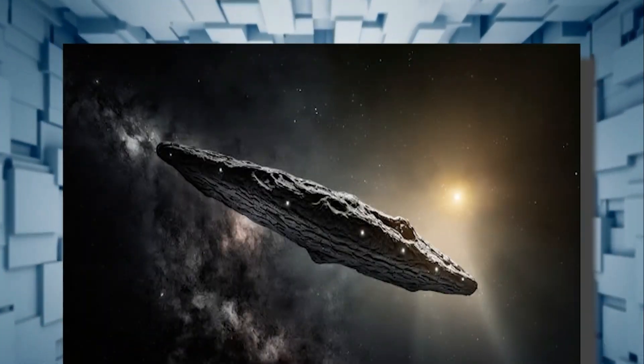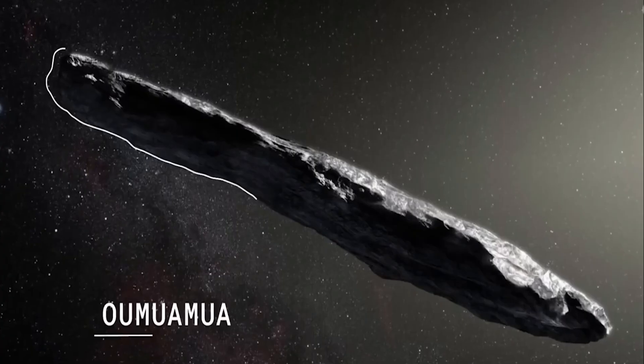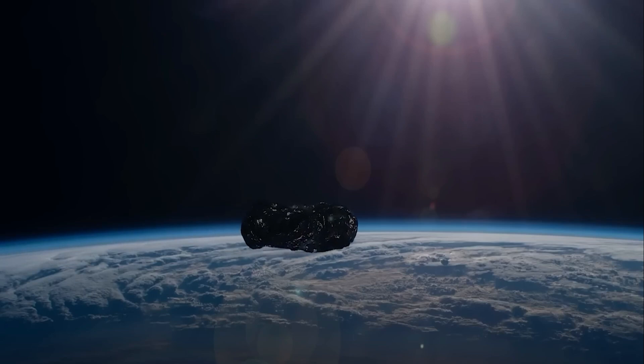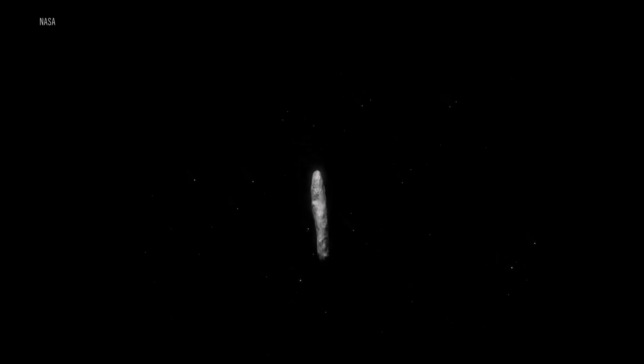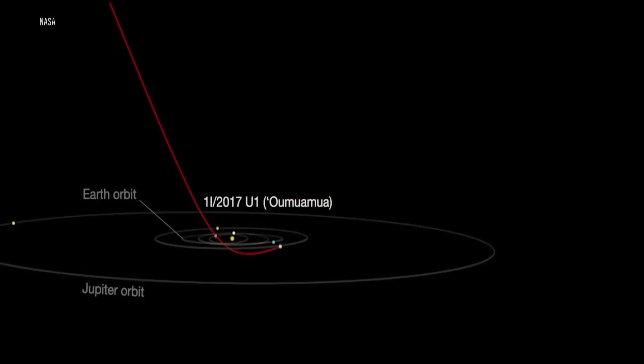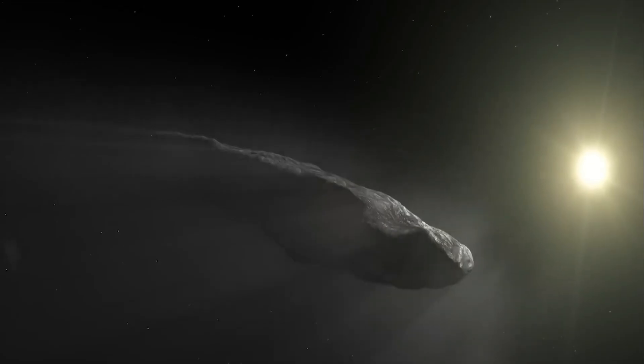Due to its rapid movement, Earth telescopes couldn't capture a clear image of Oumuamua, initially thought to be cigar-shaped. Later discoveries revealed it to be pancake-shaped, giving rise to the theory of an alien spaceship as the primary explanation for this peculiar space phenomenon.